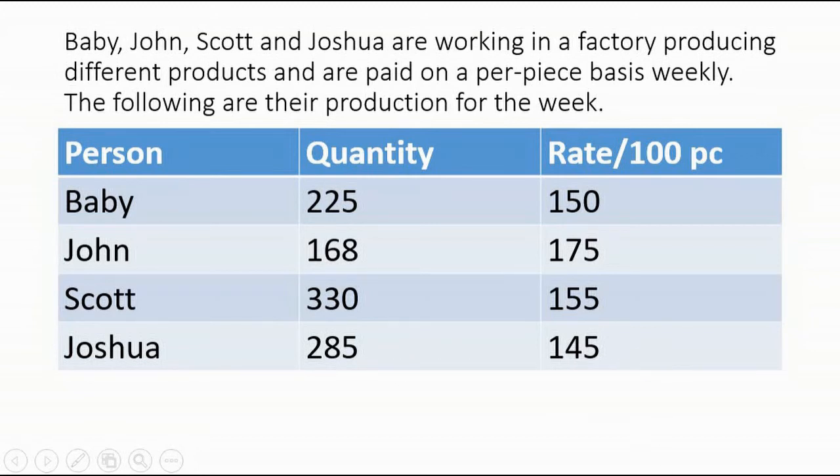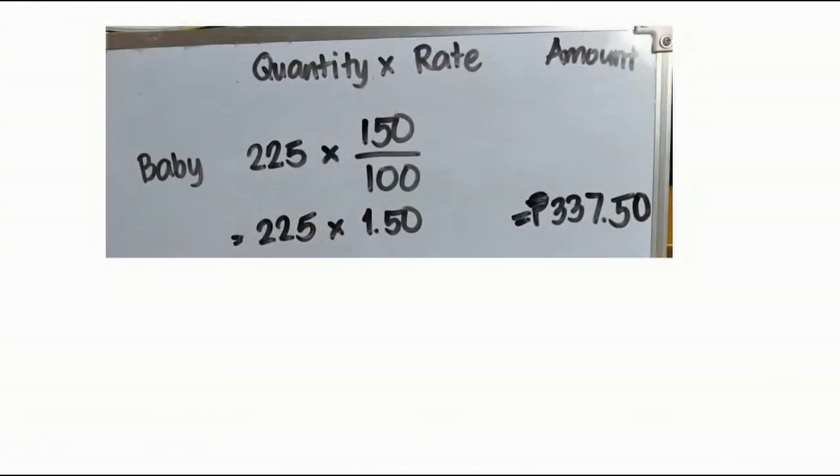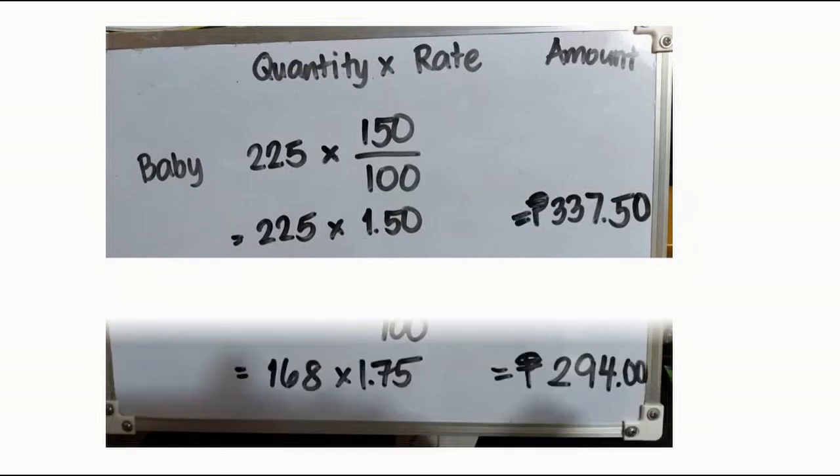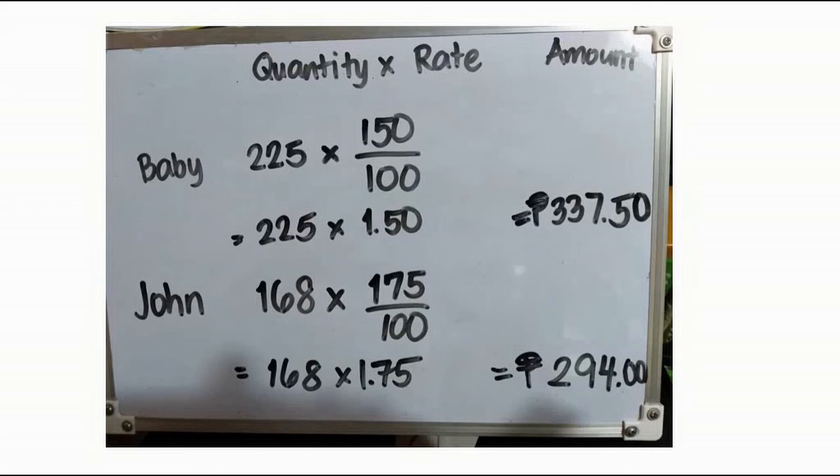Baby: 225 multiplied by 150 divided by 100, that is 225 multiplied by 1.50. If we multiply 225 by 1.50, we will get 337 pesos and 50 centavos. John: 168 multiplied by 175 divided by 100, that is 168 multiplied by 1.75, so we will get 294 pesos.